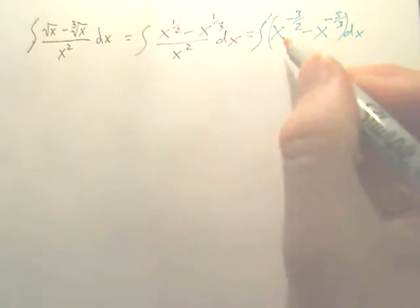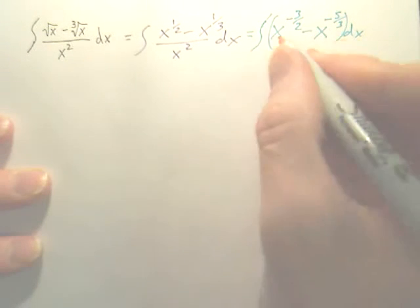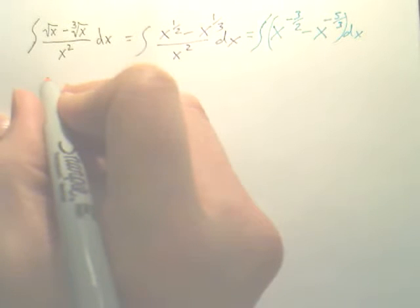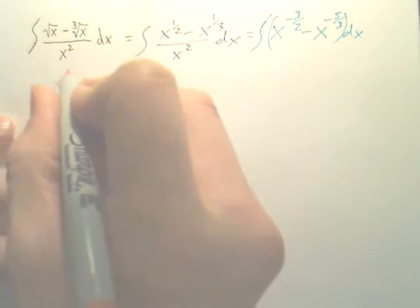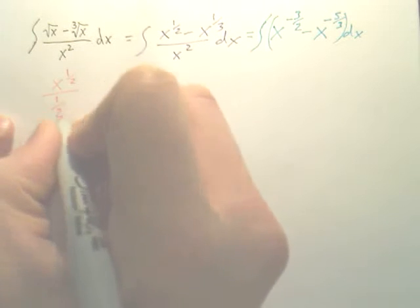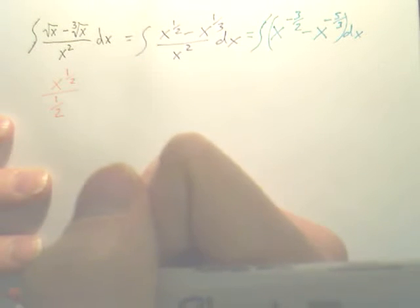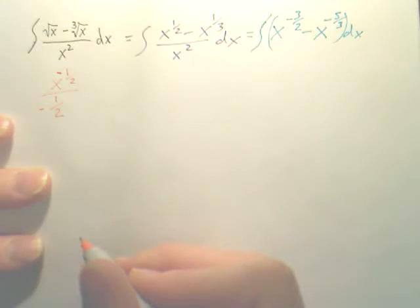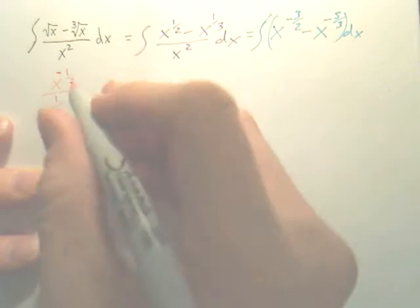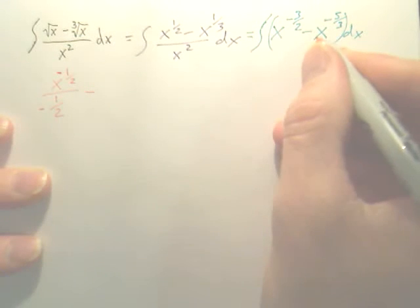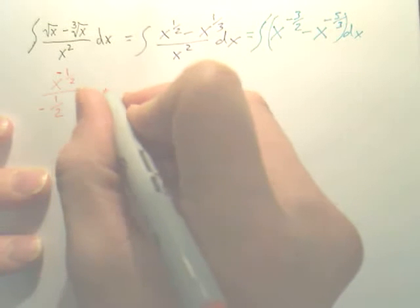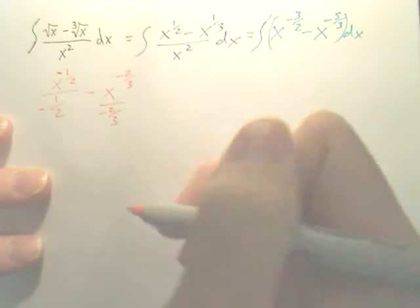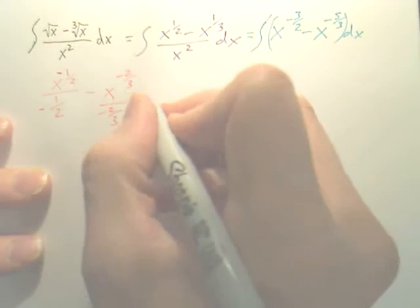Once we do that, now we can integrate each of these pieces individually. The integral of X to the negative 3 over 2 — you add 1 to the exponent, don't you get negative 1 half? So X to the negative 1 half over negative 1 half. And then you add 1 to negative 5 thirds, you get X to the negative 2 thirds over negative 2 thirds. Don't forget, plus C.